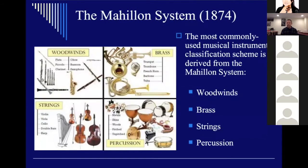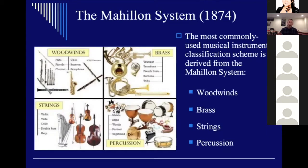Out of the Mahillon system comes the foundation for the most commonly used instrument classification system in the US public school system. If you go to any elementary or middle school and walk into the band hall or orchestra hall, there will be posters teaching that the western orchestra has four sections: a string section, a woodwind section, a brass section, and a percussion section — and maybe a keyboard section.